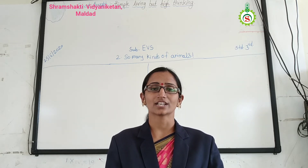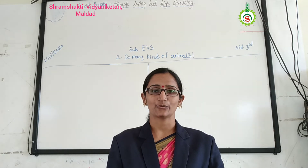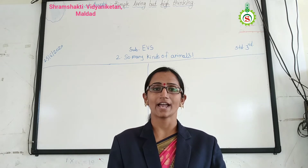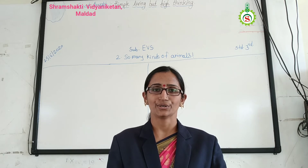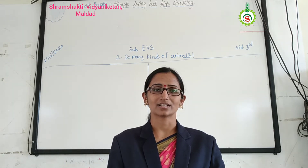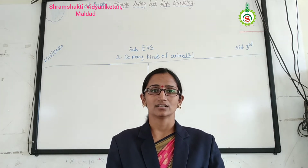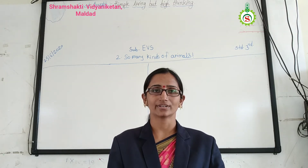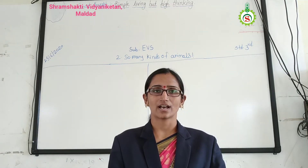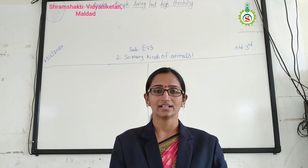Last lecture, we have seen information about our environment. Today we are going to learn about so many kinds of animals. Animals have different colors, different shapes and sizes. There are different types of animals in our surroundings. Some animals stay on land, some stay in water. Size of animals are also different — some animals are big, some animals are tiny.